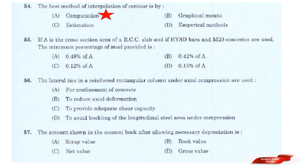Question: If A is the cross-section area of a RCC slab and HYSD bars and M20 concrete are used, the minimum percentage of steel provided is? Options: 0.48% of A; 0.42% of A; 0.12% of A; 0.15% of A. Answer: Option C — 0.12% of A.